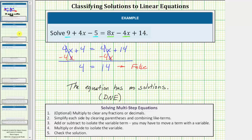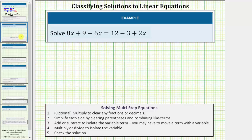Let's look at a second example. We have the same type of equation, so for the first step we'll simplify both sides. On the left we have two x terms, and on the right we have two constant terms. On the left side, eight x minus six x is two x, so the left side simplifies to two x plus nine. On the right side, twelve minus three equals nine, so the right side simplifies to nine plus two x, or two x plus nine.